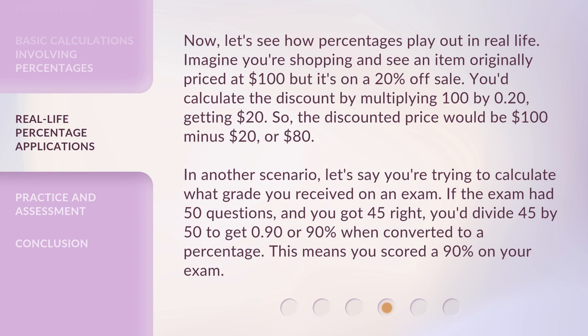Now, let's see how percentages play out in real life. Imagine you're shopping and see an item originally priced at $100, but it's on a 20% off sale. You'd calculate the discount by multiplying 100 by 0.20, getting $20. So the discounted price would be $100 minus $20, or $80.